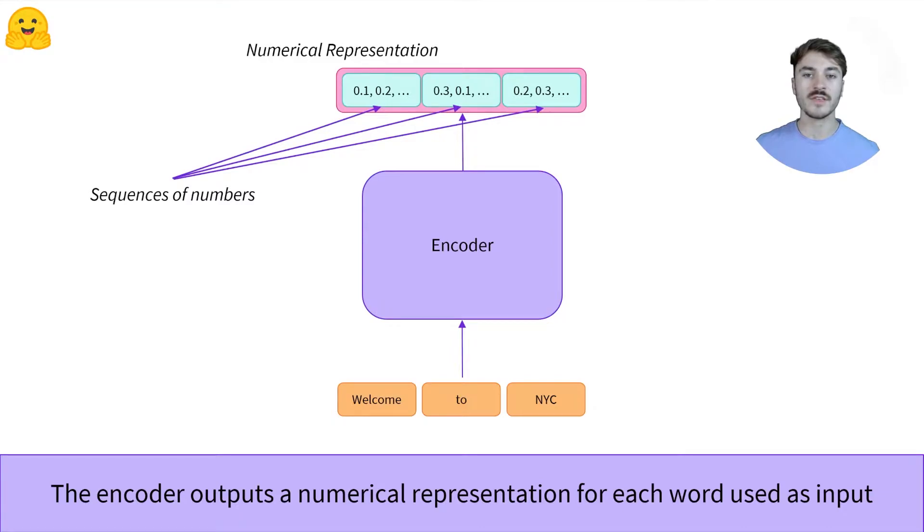Here, for example, the encoder converts those three words, Welcome to NYC, in these three sequences of numbers.